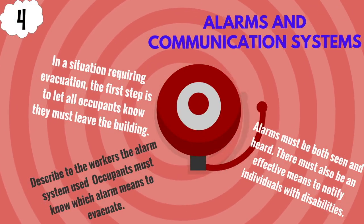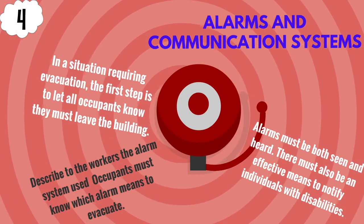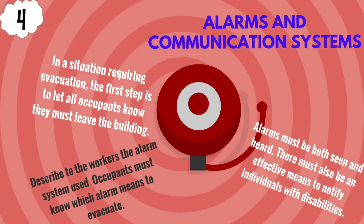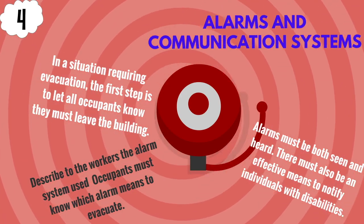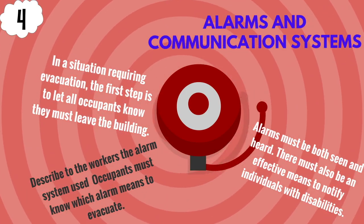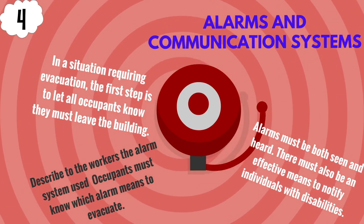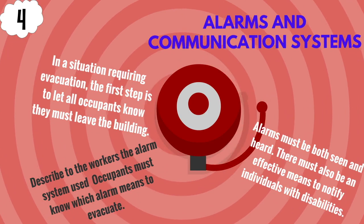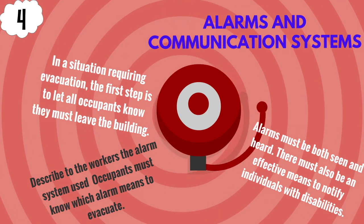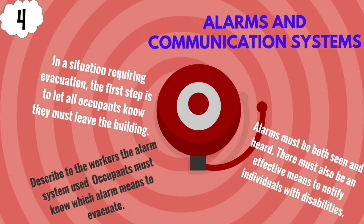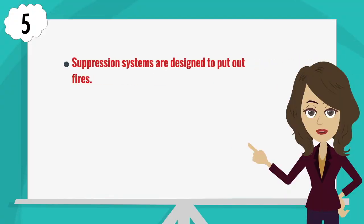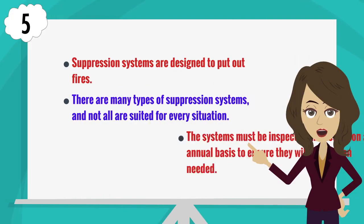Alarms and communication systems are also important elements of an emergency response plan. In a situation requiring evacuation, the first step is to let all occupants know they must leave the building. Alarms must be both seen and heard to notify all individuals, including persons with disabilities.